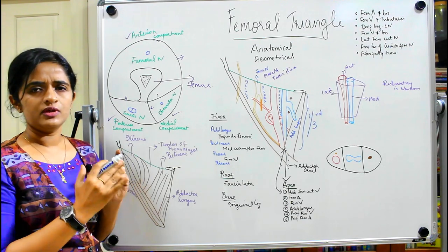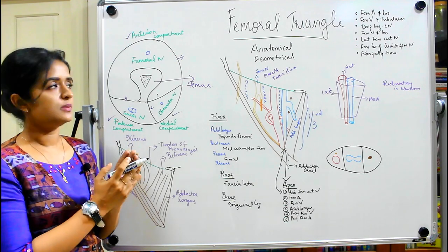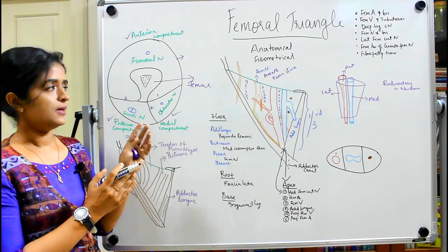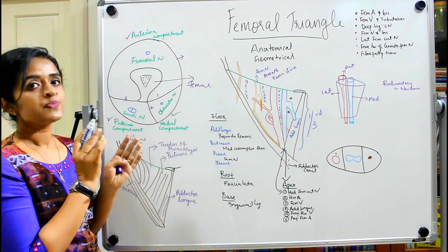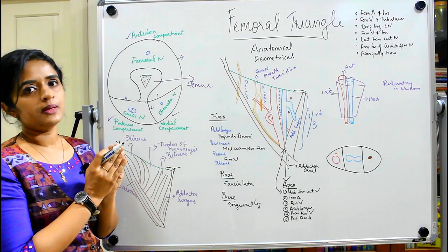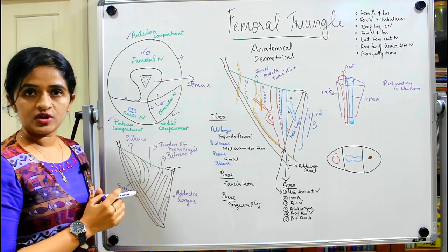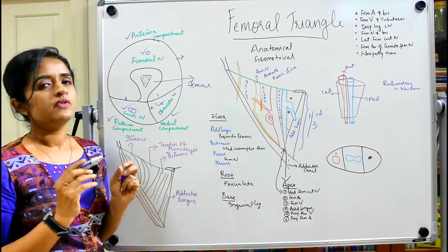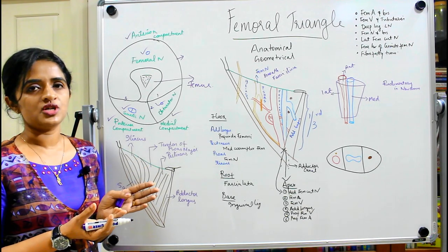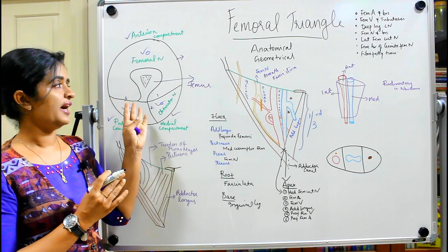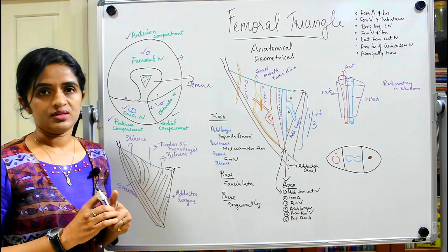I am giving you a rough overview so that when we go to the main topic you know where this part of the thigh is lying. There are mainly three compartments in the thigh. When you talk about a compartment you should know the nerve of that compartment: anteriorly you have the femoral nerve, medially the obturator nerve, and posteriorly the sciatic nerve. Knowing this diagram makes it easy to identify the main nerve and its branches.